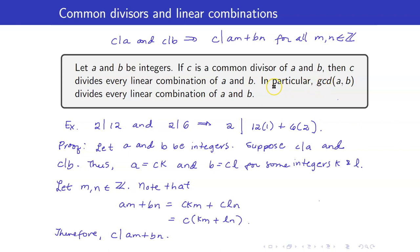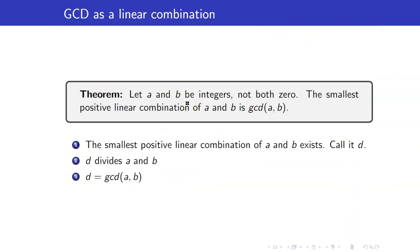This is the big theorem we want to prove: let a and b be integers, not both zero. The smallest positive linear combination of a and b is the GCD of a and b. To prove this theorem, I will divide the proof into three parts. First, we show that the smallest positive linear combination of a and b exists — we call it d. Next, we show that d divides a and b, making it a common divisor. Lastly, we show that d is the greatest among all common divisors.